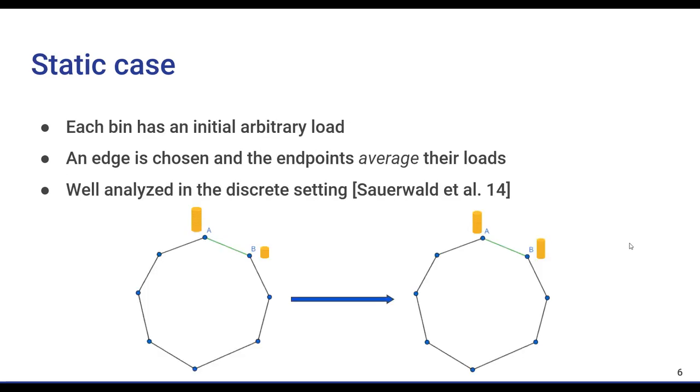Another approach is to analyze load balancing in a static setting. In this case, each bin has an initial random load, and at each step, an edge is chosen and the two endpoints average their loads.